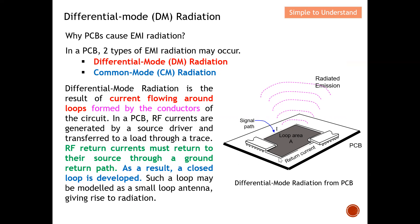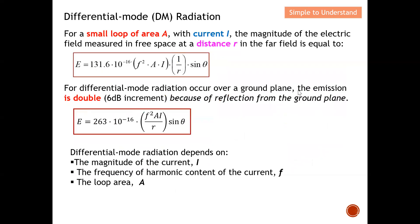For a small loop of area A with current I, the magnitude of the electric field measured in free space at a distance R in the far field is given by this equation. The area A is in square meters, the current I is in amperes, and R is the observation distance. For example, if we conduct measurements in a 3-meter chamber, R equals 3 meters; in a 10-meter chamber, R equals 10 meters. This equation gives a simple way to calculate how much radiation is emitted from this loop antenna.